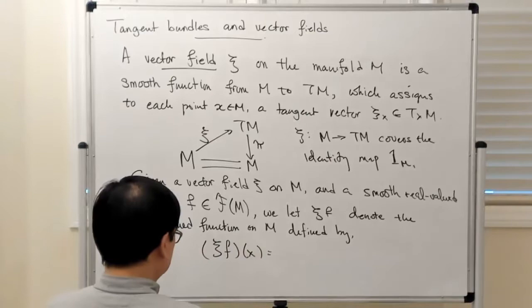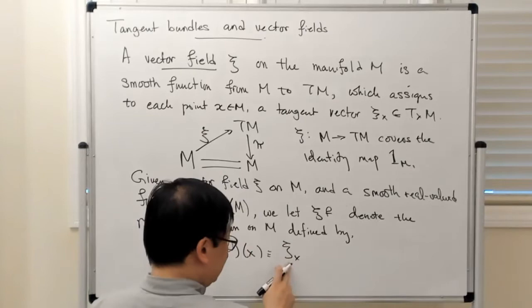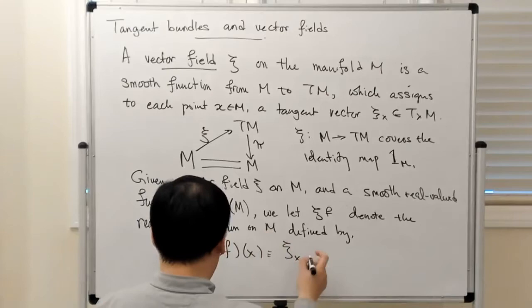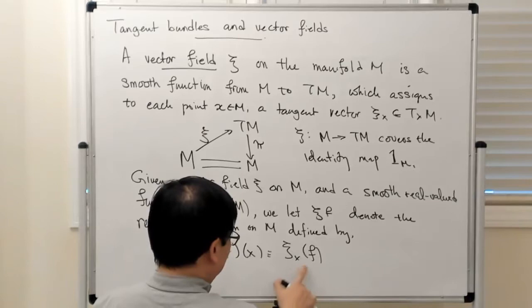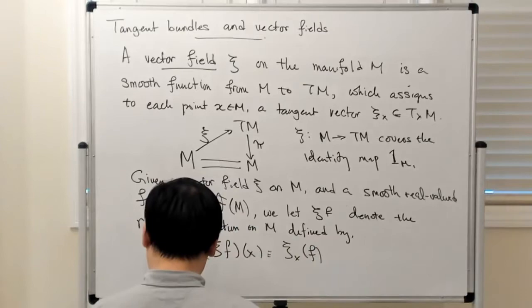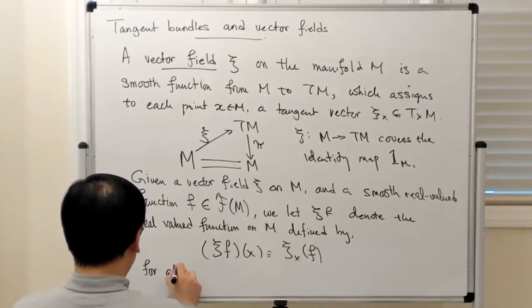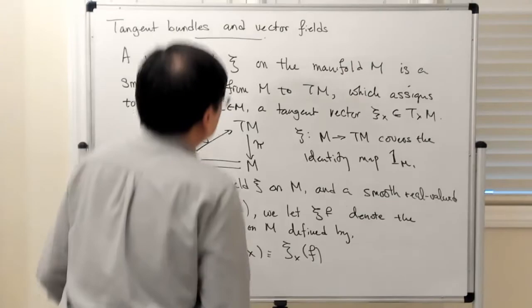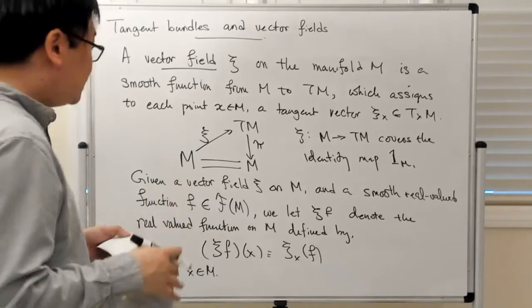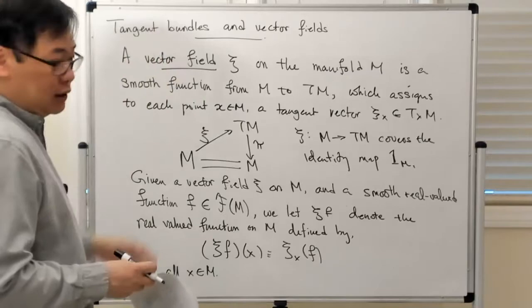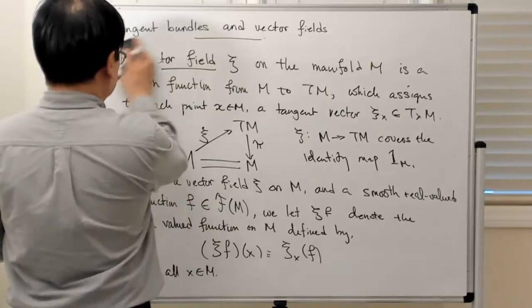CF at the point X is defined to be CX — the evaluation of the vector field at the point X, which is a tangent vector — acting on F. That's a map from the space of smooth functions at X to the reals, and this holds for all X in M.